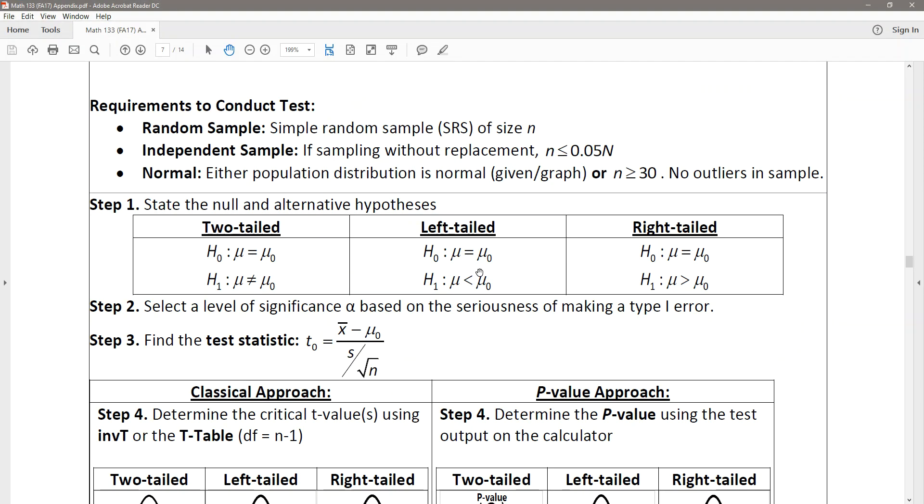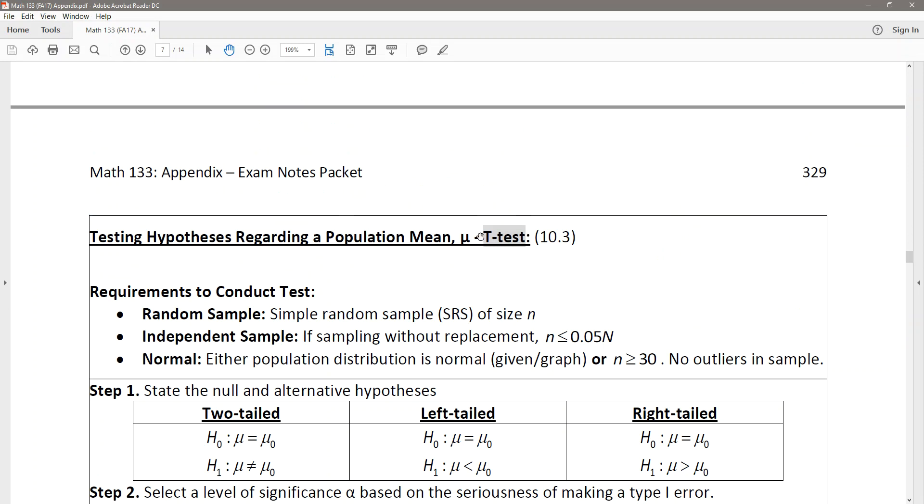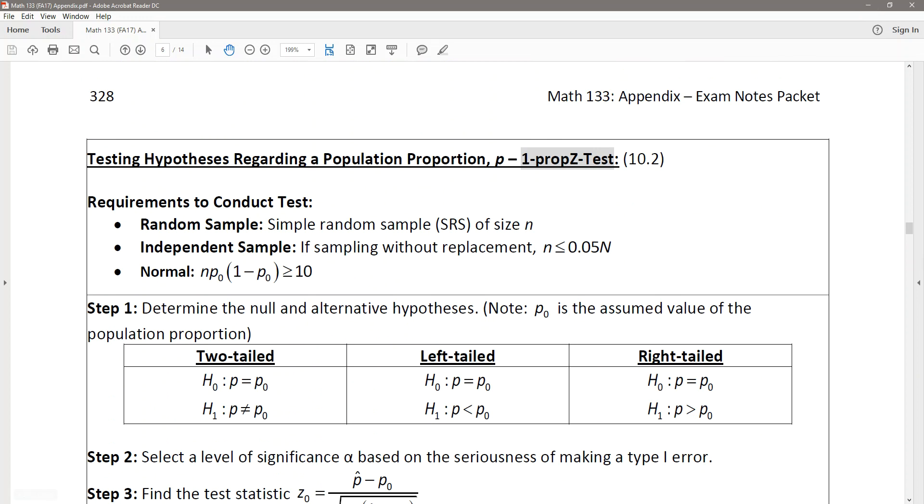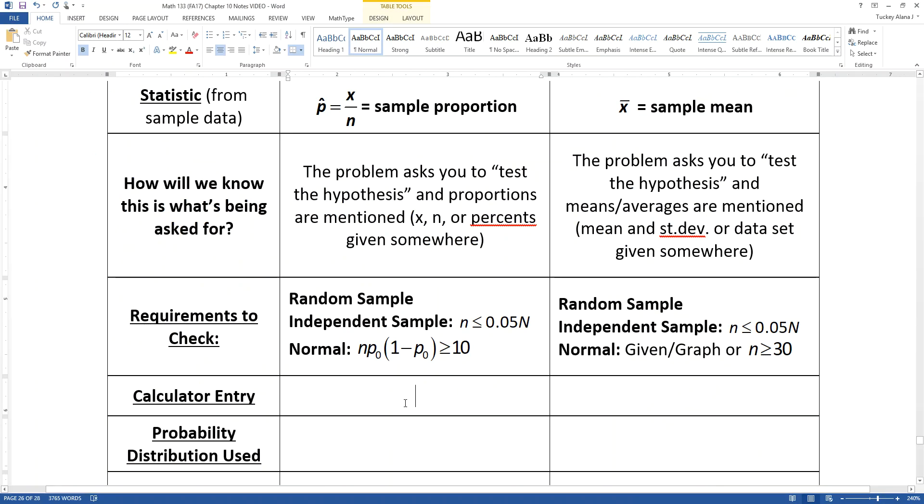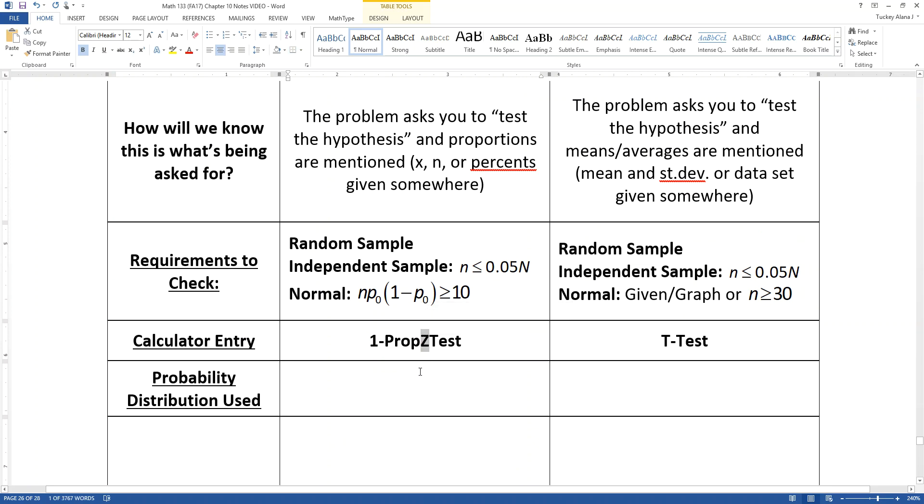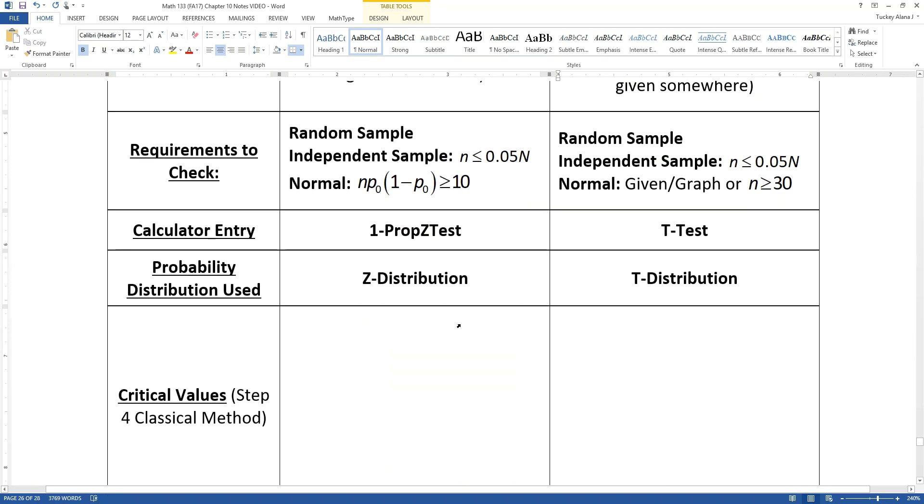The calculator entry, if you look back here on the pages, I actually tell you what the calculator entry is right there at the top in that little gray highlight section. T-test is the one for the means, and one-prop z-test is the one for proportions. It's telling you right there in the formula what distribution you're using. You're using the z-distribution for the proportion test and the student's t-distribution for the t-test.